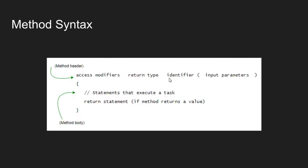After the return type, we must give our method an identifier — the identifier is just the name of our method. By convention, methods begin with a capital letter and usually have some type of action word, for example: WriteLine, ReadLine, ReadKey. These names describe the work that is being done.